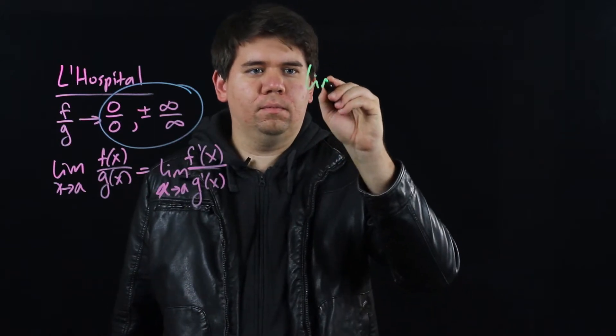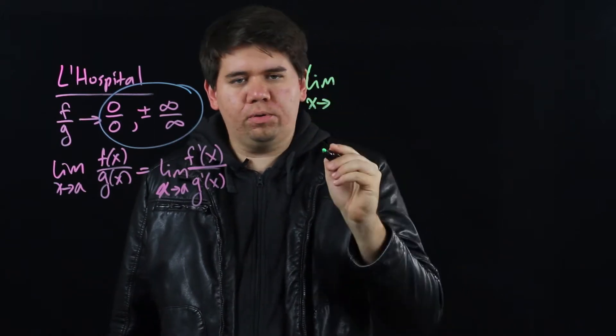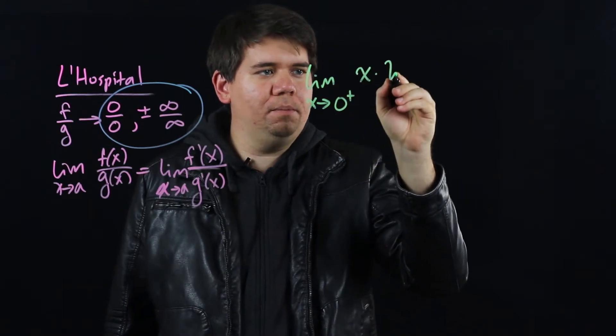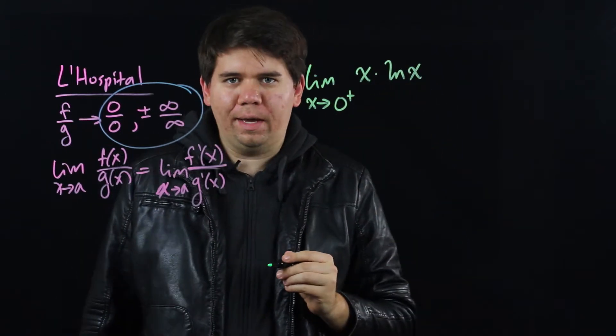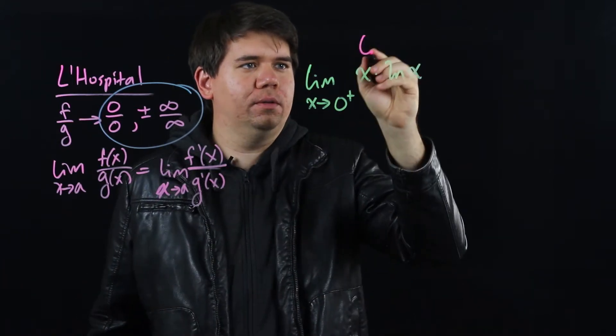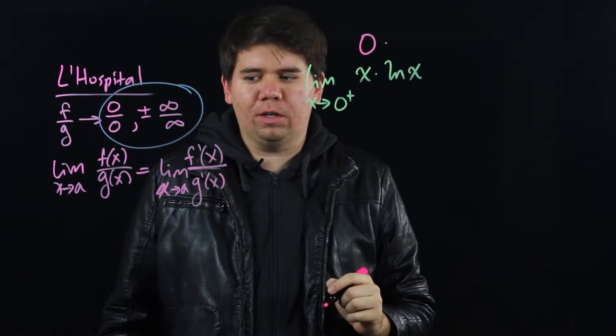What's the limit as x approaches 0 from the right-hand side of x times the natural log of x? Well, that x is just going to be going to 0, but how about the natural log of x?